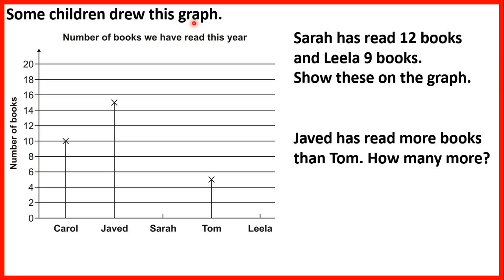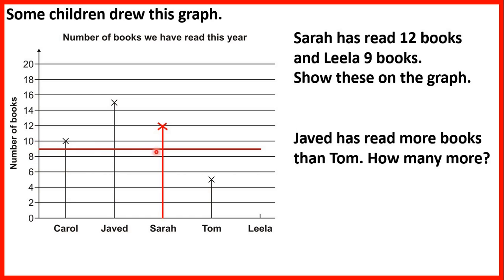Some children drew this graph. Sarah has read 12 books and Leela 9 books. Show these on the graph. So we need to draw the line for Sarah and for Leela. Sarah has read 12 books, so if we go across from 12, we can see that Sarah's line will need to be this high. And Leela has read 9 books, so 9 will be in the middle of 8 and 10. If we go across, we can see that Leela's line will need to be this high.